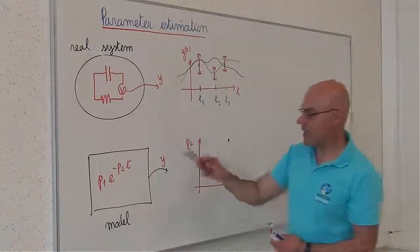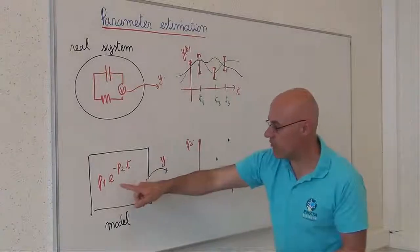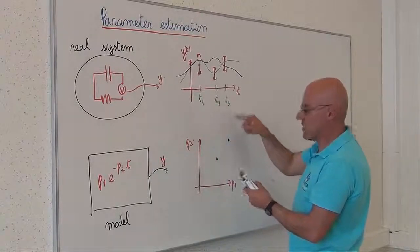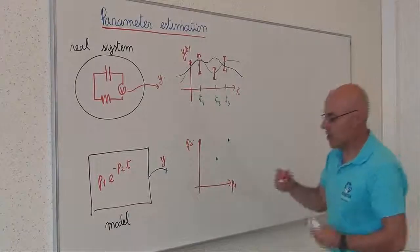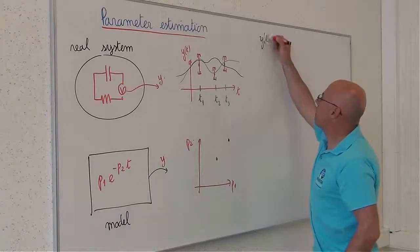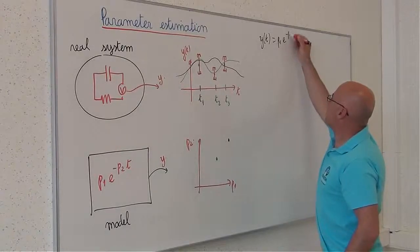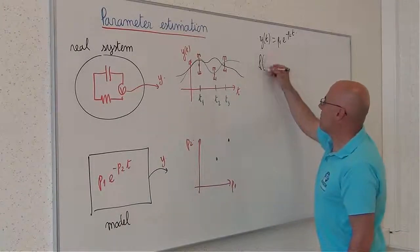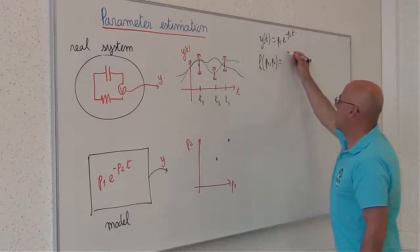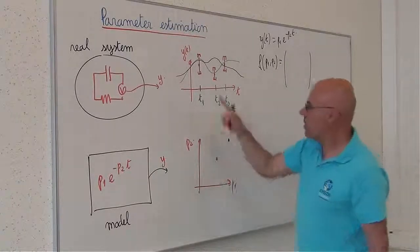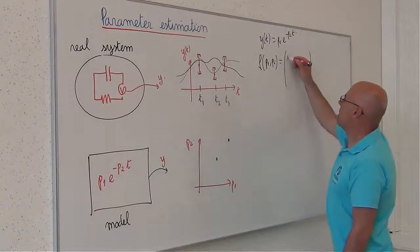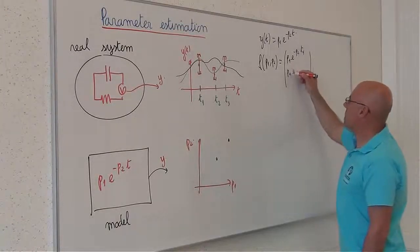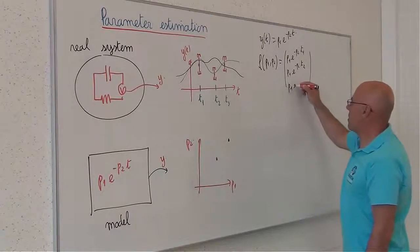My simulator will make it possible to compute from P1 and P2 the three outputs corresponding to T1, T2, T3. Here, since my model is Y of T equals P1 exponential minus P2 times T, my simulator is a function F which takes P1 and P2 as input and will return the three outputs: P1 exponential minus P2 times T1, P1 exponential minus P2 times T2, and the same for T3.